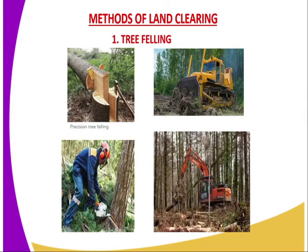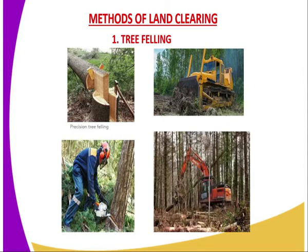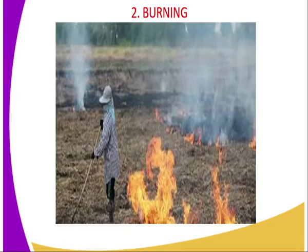Then we have the methods of land clearing. The first method is tree felling. During tree felling, you can use various methods. For those people who are doing land clearing on a large scale, they can cut down the trees using a bulldozer — that is a machine which is well displayed there. For small scale farmers, they can use an axe to cut down trees during tree felling. You can also use a power saw or electric saw when it comes to tree felling as a method of land clearing.